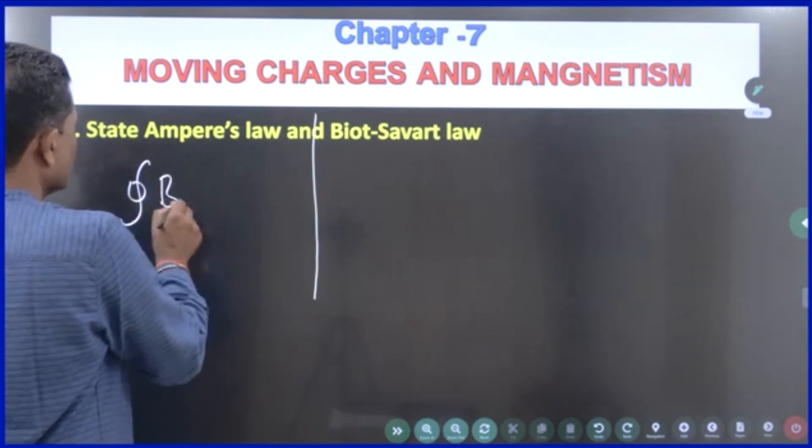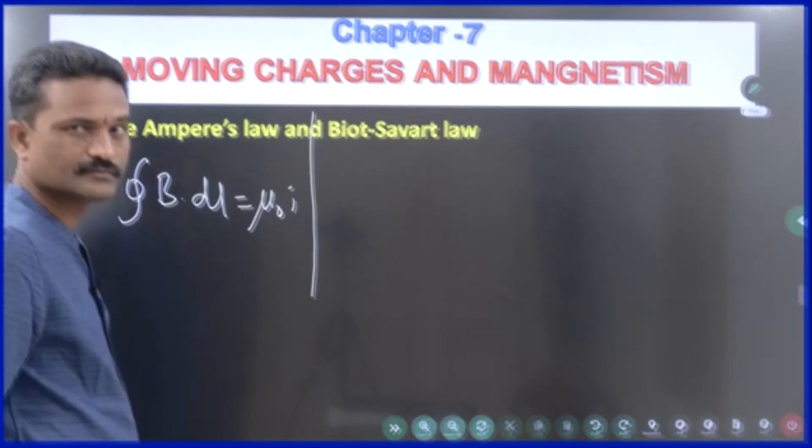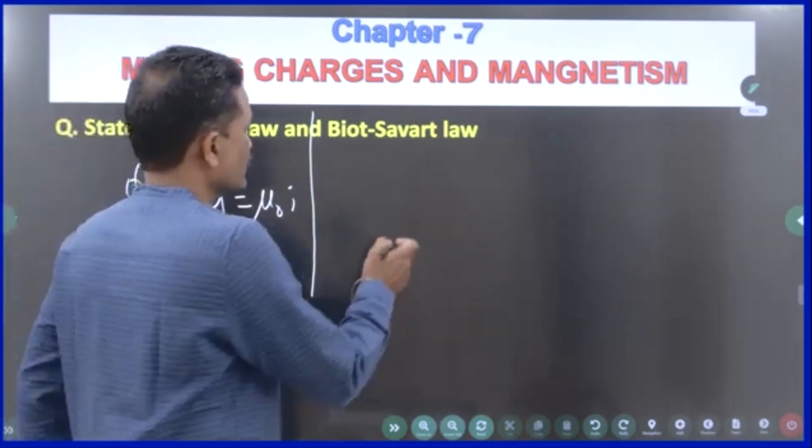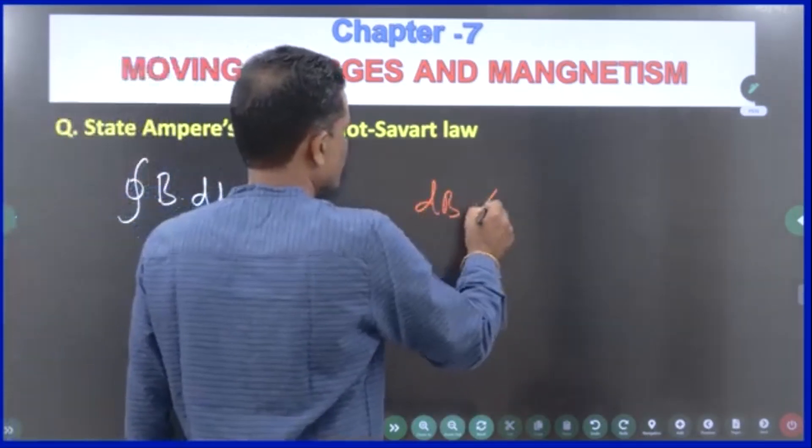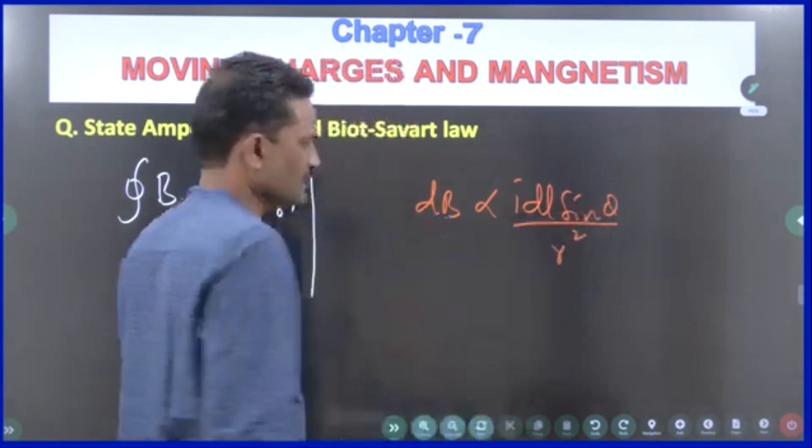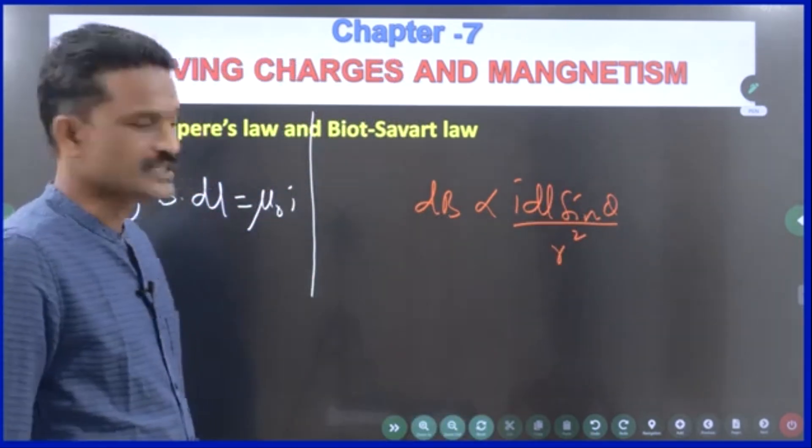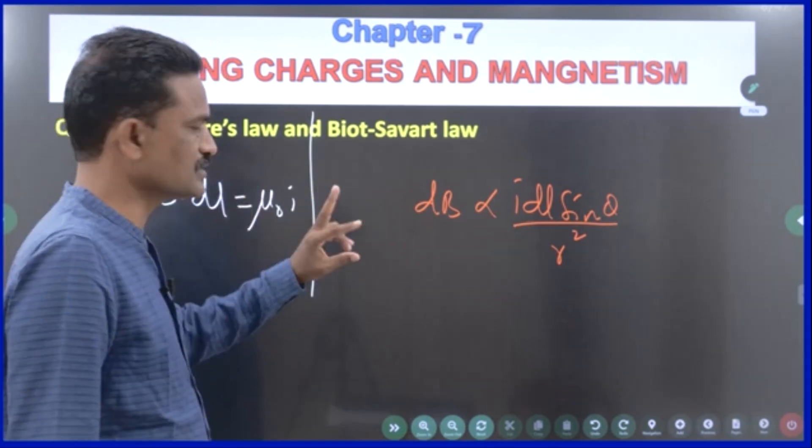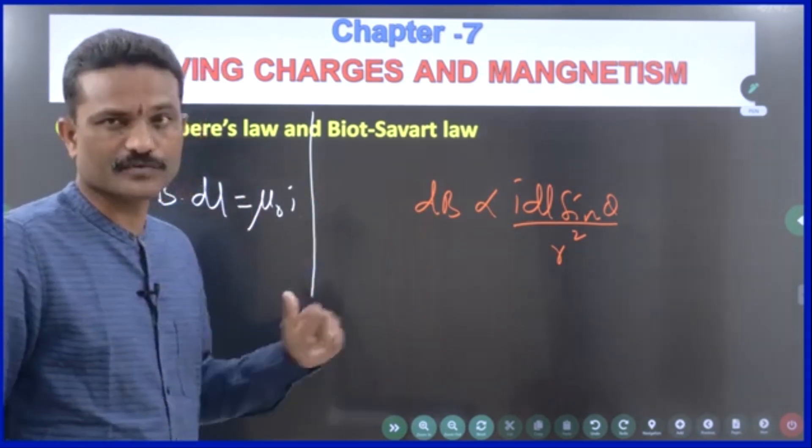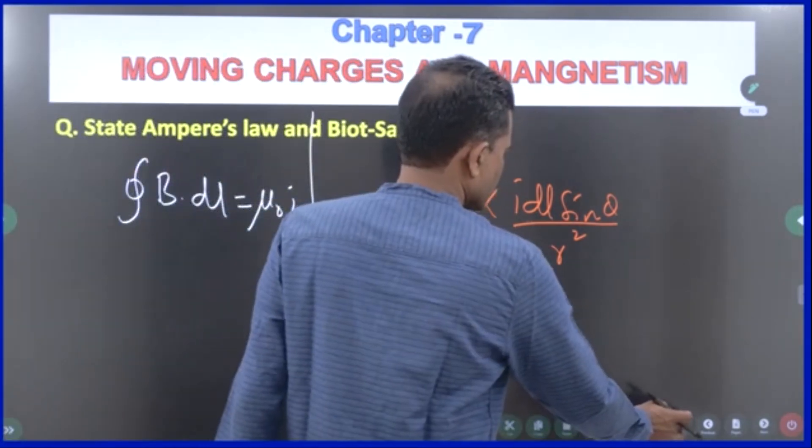The first one is integral b dot dl is equal to mu naught times i. Next one: dB is proportional to i dl sine theta by r square. If you remember these two, you will be able to write two statements. Generally, I think these two questions will not come under the same question. Now, I will try to explain. The first one is Ampere's law.